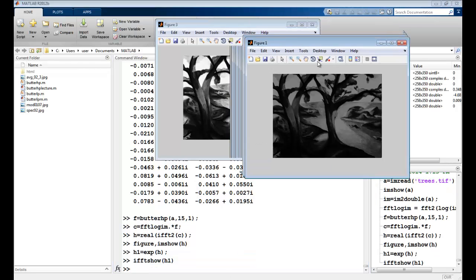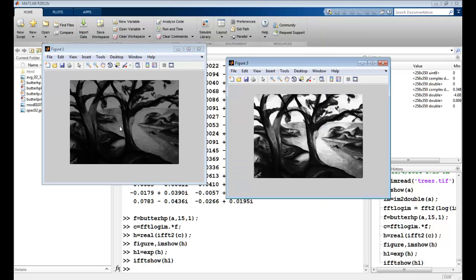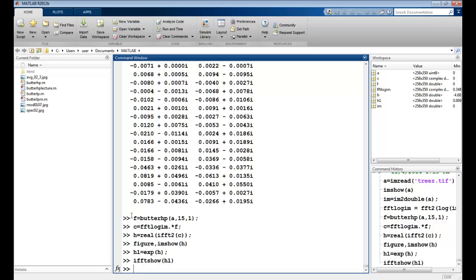So you can see this was my original image which had lesser illumination, and now the illumination is corrected. You can play around with various high pass filters which we have studied in the previous classes. This brings us to the end of this lecture. See you in the next one. Thank you.